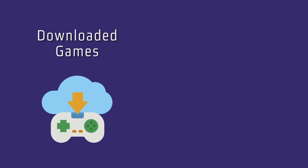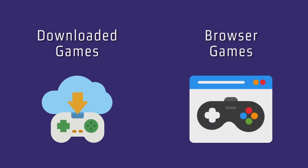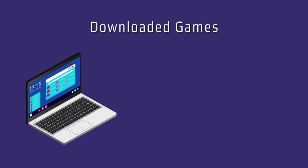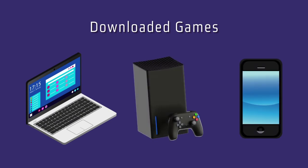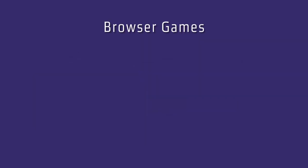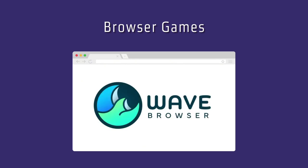First, let's break down what we mean by downloaded games and browser games. Downloaded games are those you install on your device, whether it's a PC, console, or mobile. Browser games, on the other hand, are played directly in your web browser, like Wave Browser, without any installation.